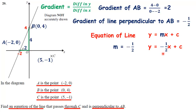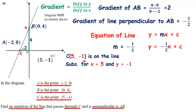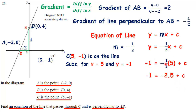I know the line goes through C, and C has coordinates (5, -1). This point is on the line I want to work out, so I'm going to substitute x = 5 and y = -1 into the equation. So: minus one equals minus a half times five, which gives minus two point five, plus c. To get rid of the minus two point five, I add two point five to both sides. Minus one plus two point five is one point five. So c equals one point five.